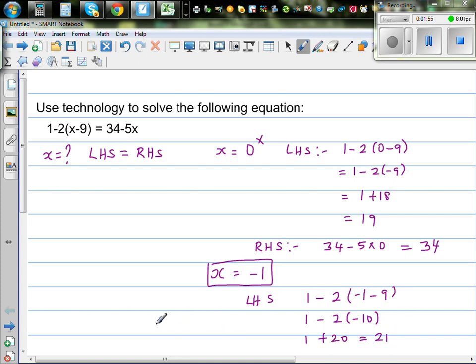Now if you take your right hand side, so let me do the right hand side here. If you put negative 1, that will be 34 minus 5 times negative 1, which is 34 plus 5, which is 39. So this is also not right.